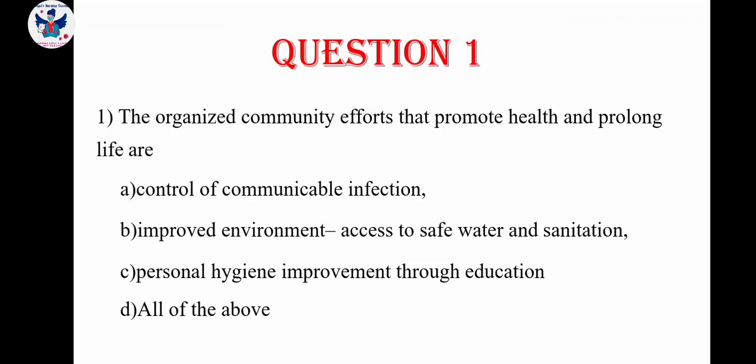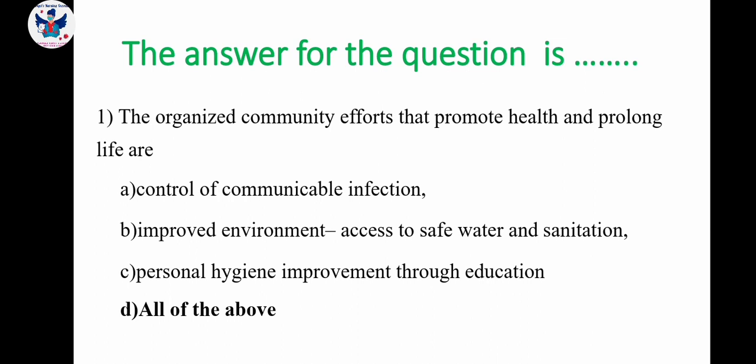Question number 1. The organized community efforts that promote health and prolong life are: A. Control of communicable infection, B. Improved environment, access to safe water and sanitation, C. Personal hygiene improvement through education, D. All the above. The first three options are related to efforts done by the community — controlling communicable infection, improving the environment with safe water and sanitation, and personal hygiene. If we follow these three things we can promote our health. The correct answer is option D, All the above.